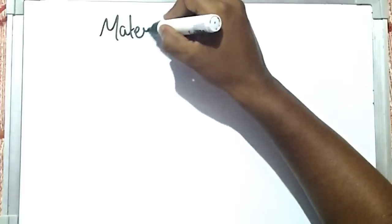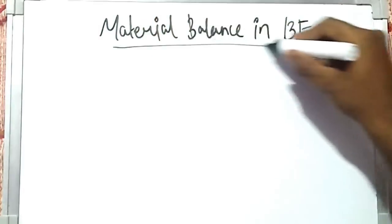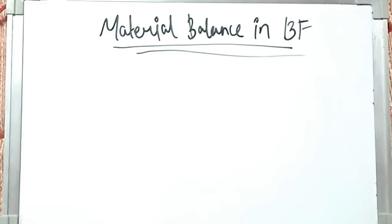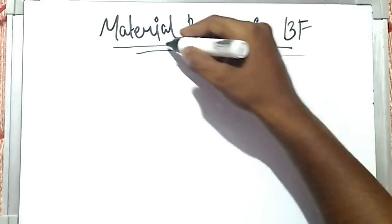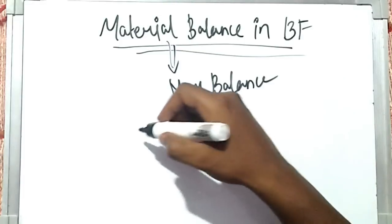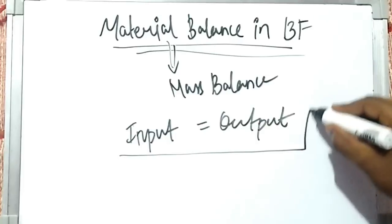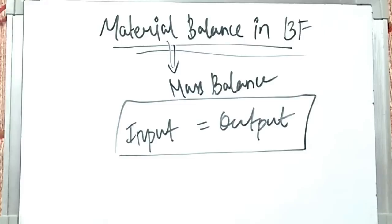Hello, this is Avinash and you're watching Everything Metallurgy. With the last lecture we completed iron making. Now we'll see the numerical part — material balance in iron making, or material balancing in the blast furnace. Generally, material balance is nothing but equating the masses. It is also called mass balance — balancing the mass from input and output. The mass of a constituent must be the same in both input and output.